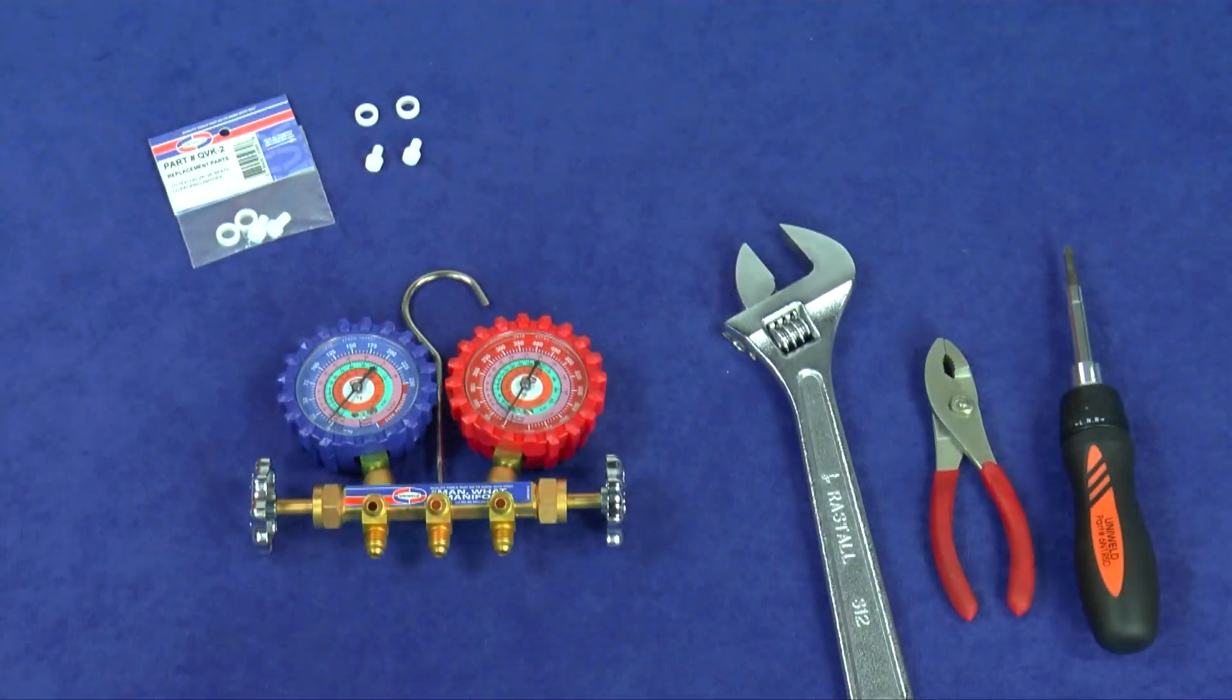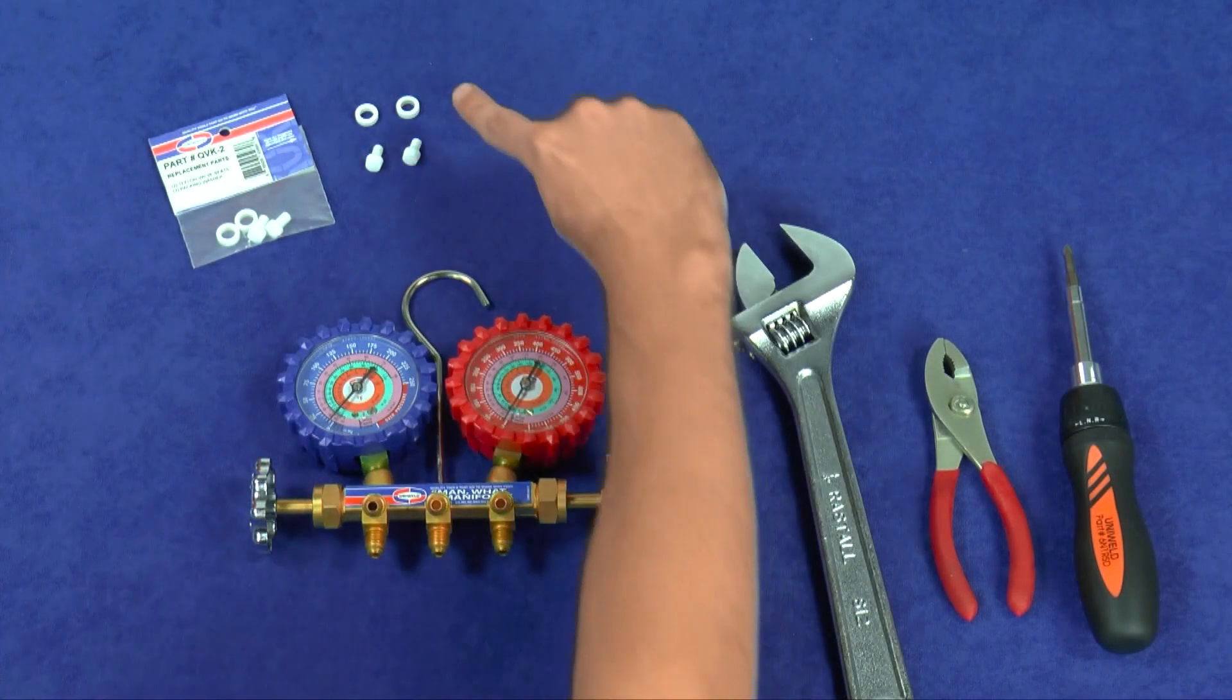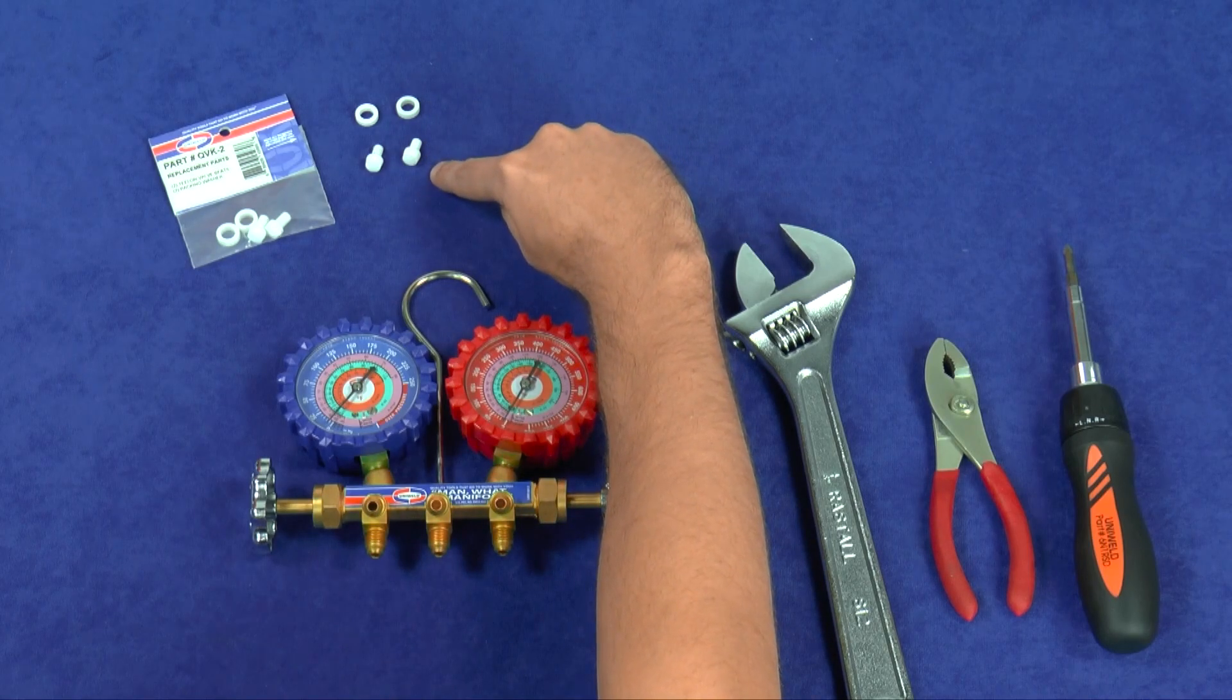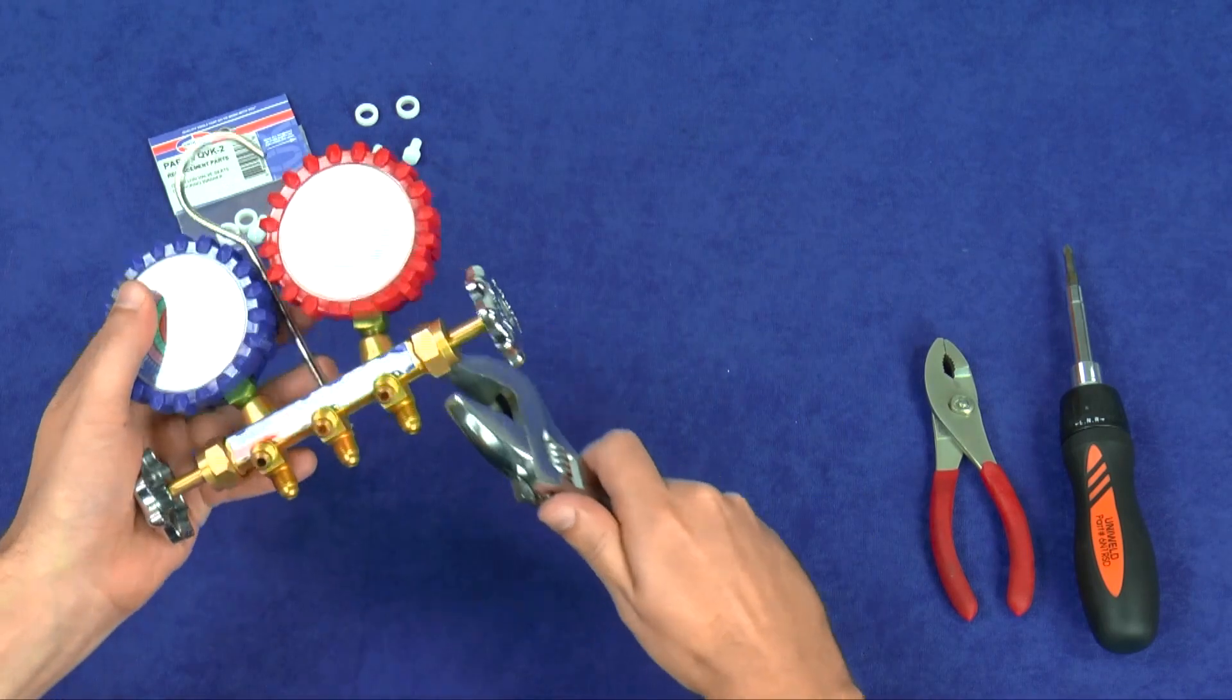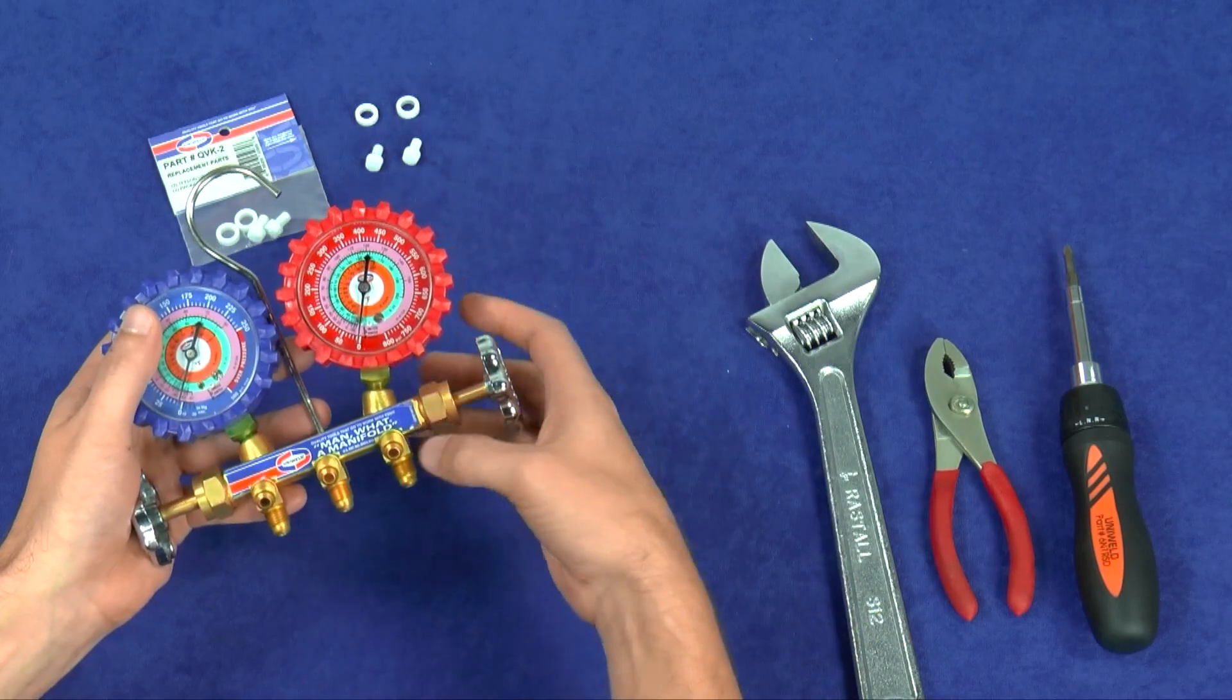The second option, the QVK2 rebuild kit, includes two Teflon washers and two Teflon valve seats, allowing you to rebuild both the high and low side valve stem assemblies.